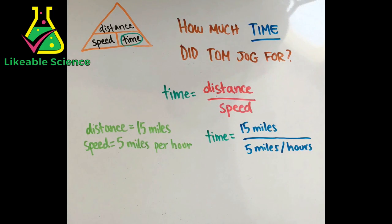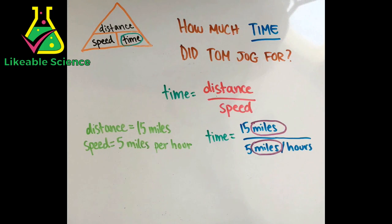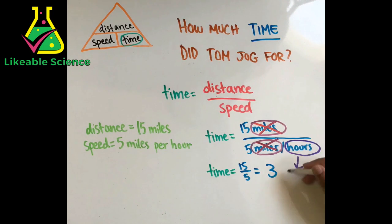The word miles is common on the top and bottom of the equation, so we can cross it out. This means that our answer will be the remaining unit, hours. 15 divided by 5 is 3, so the only uncommon unit is hours. So the answer to the problem is time equals 3 hours.